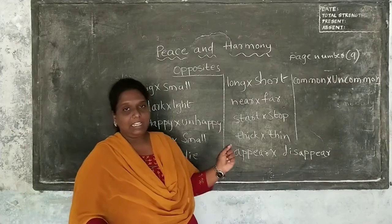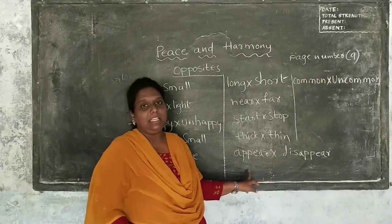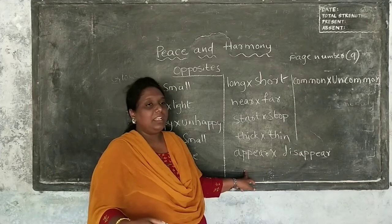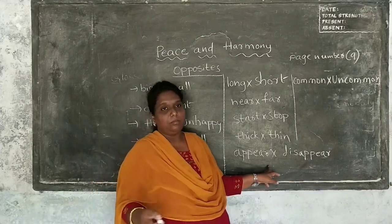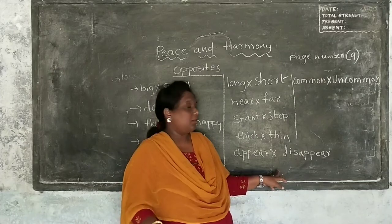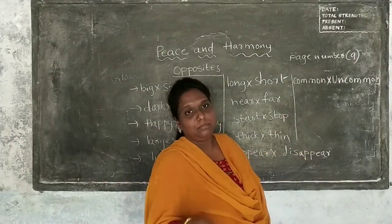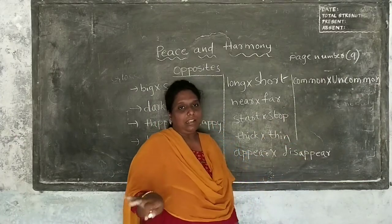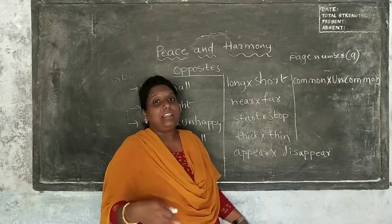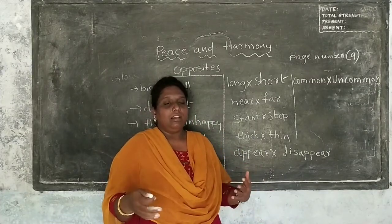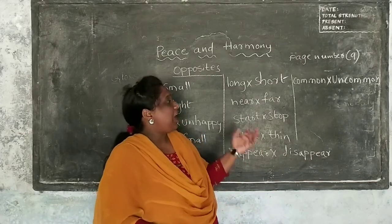If you are thick, then the opposite is thin. Appear, disappear — appear means kanabadi, and disappear means missabidi. Then common, uncommon. Common means common — daily. Uncommon means it is irregular. Unusual means it is uncommon.